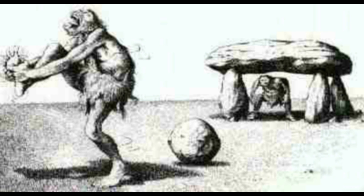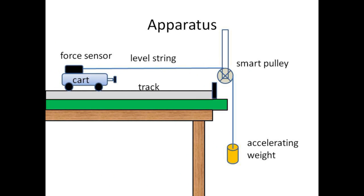The apparatus you will use to study the second law consists of a cart with a force sensor on board, accelerated down a straight track by a string passing over a smart pulley and attached to an accelerating weight. The smart pulley sends signals to the computer about its amount of spin so that the acceleration may be determined.